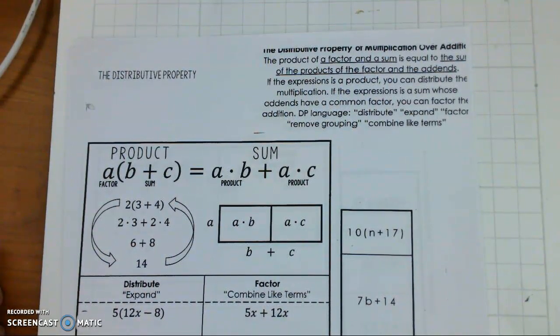So we are going to work with multiplication over addition. And the product of a factor and a sum is equivalent to the sum of the products of the factor and the add-ins.